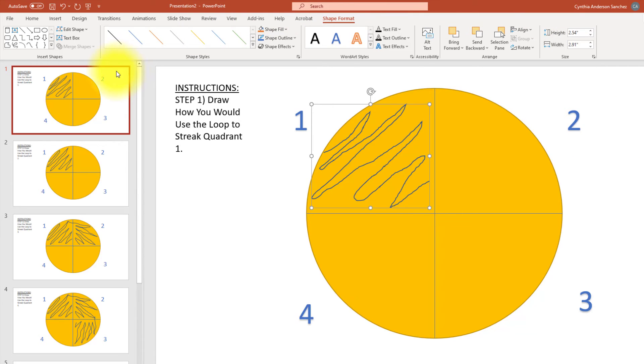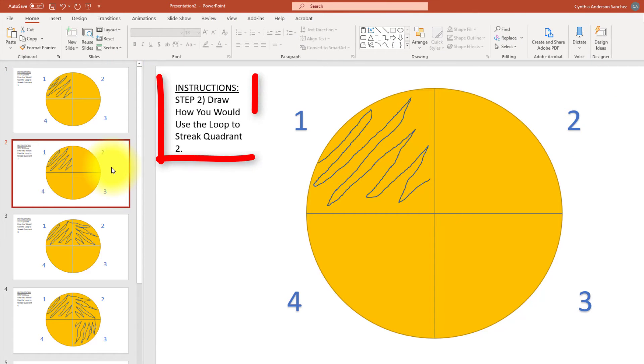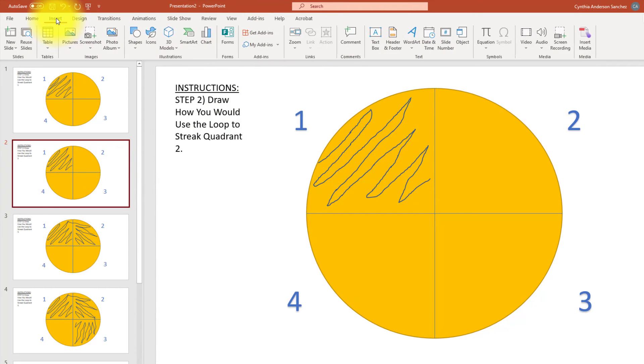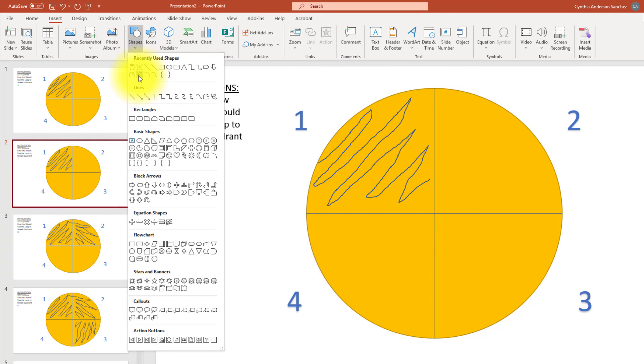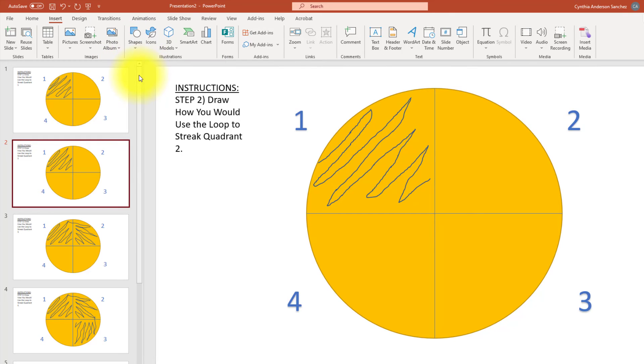Good, now we can go on to slide number two. Step two, draw how you would use the loop to streak quadrant two. Again we'll go to Insert, Shapes, and Scribble. Now remember, when going into quadrant two, you will first flame the loop, and then we'll need to drag a small amount of the inoculum from quadrant one into quadrant two.